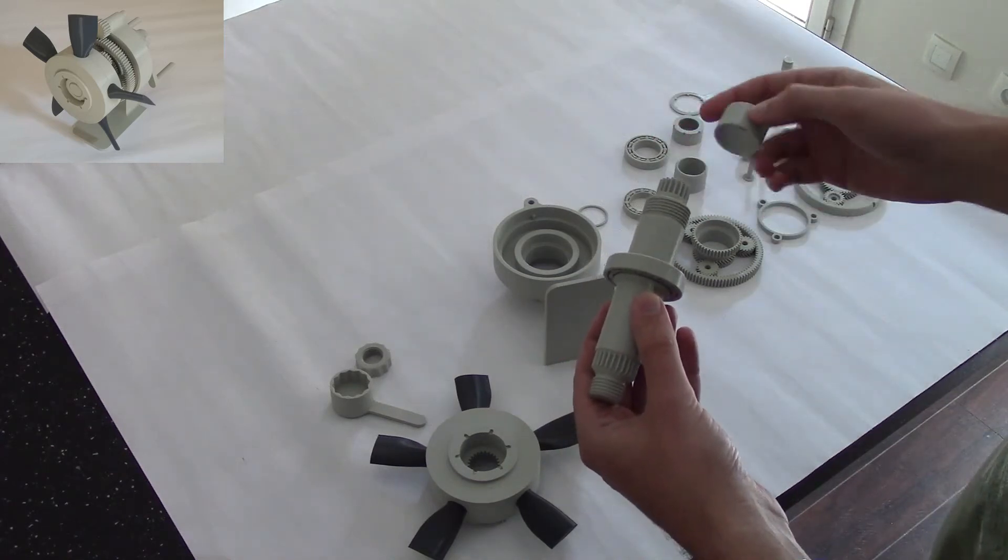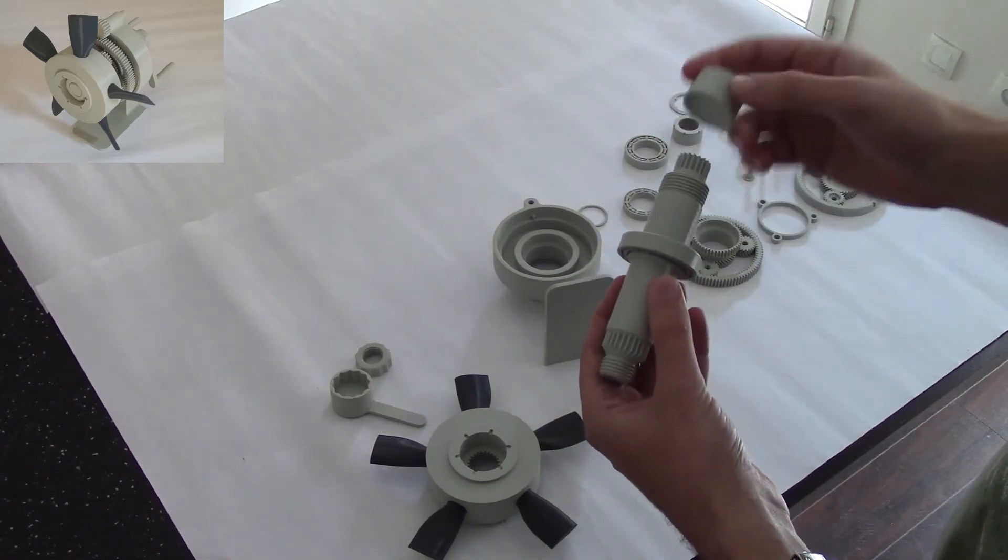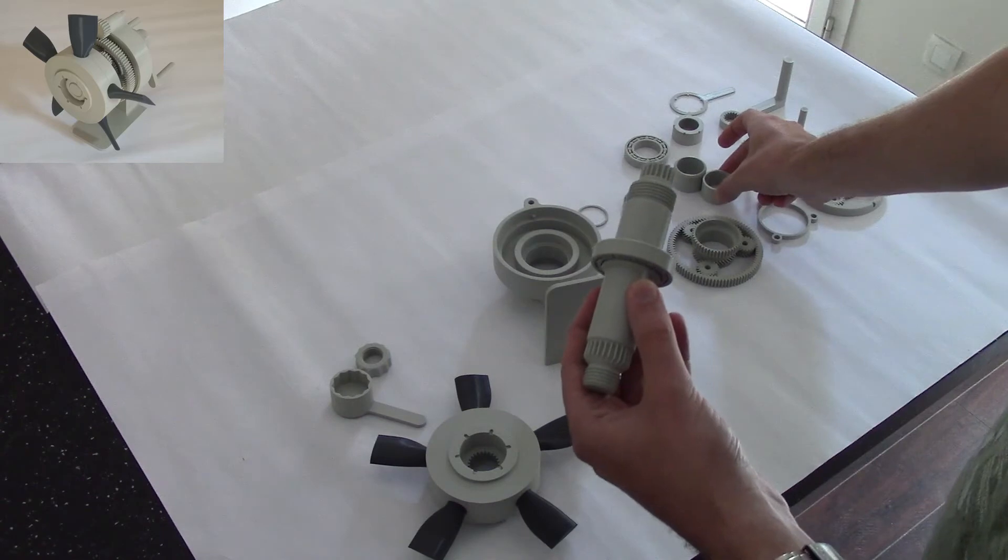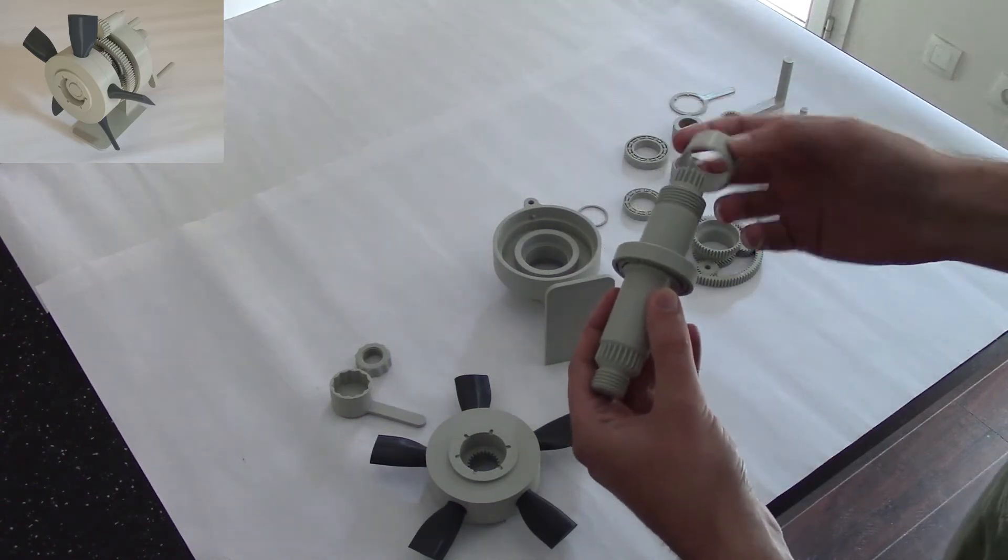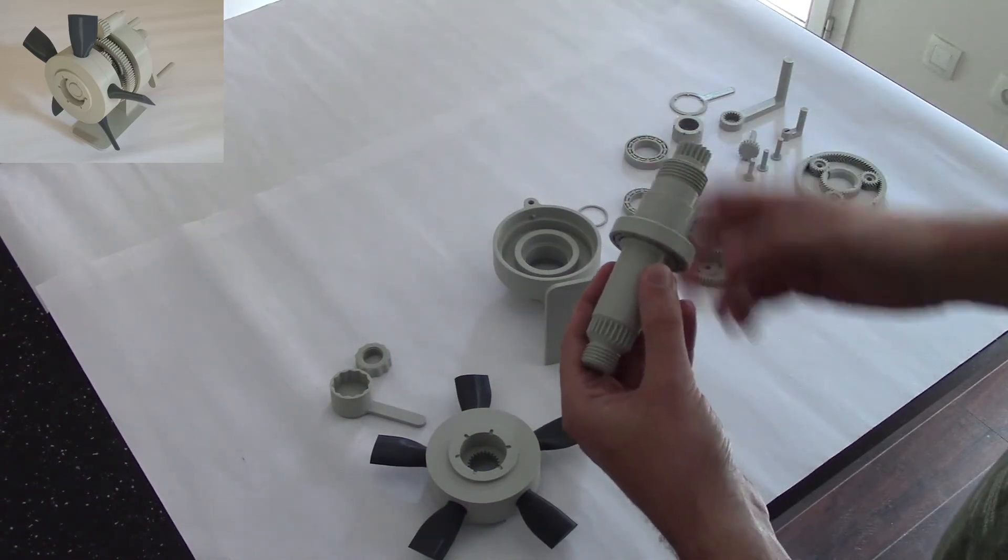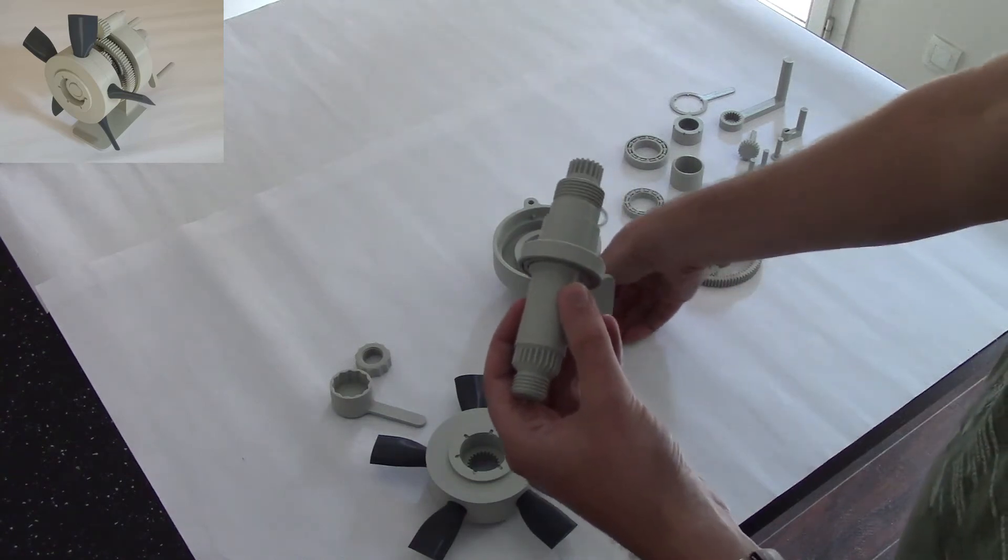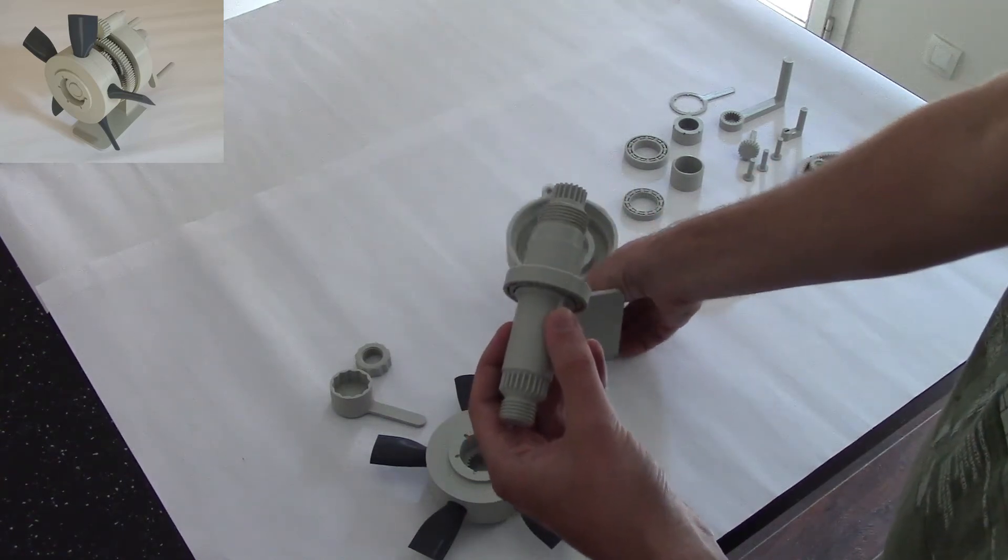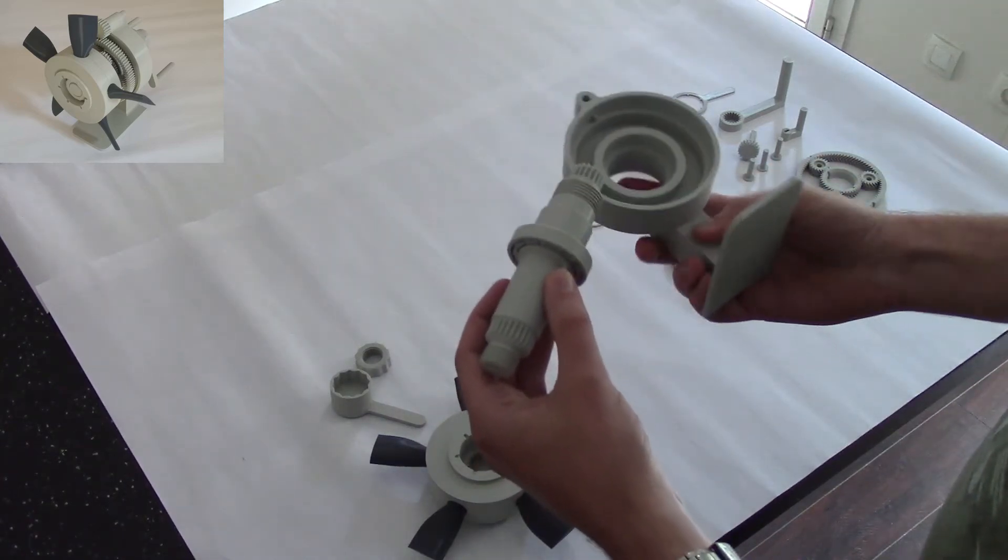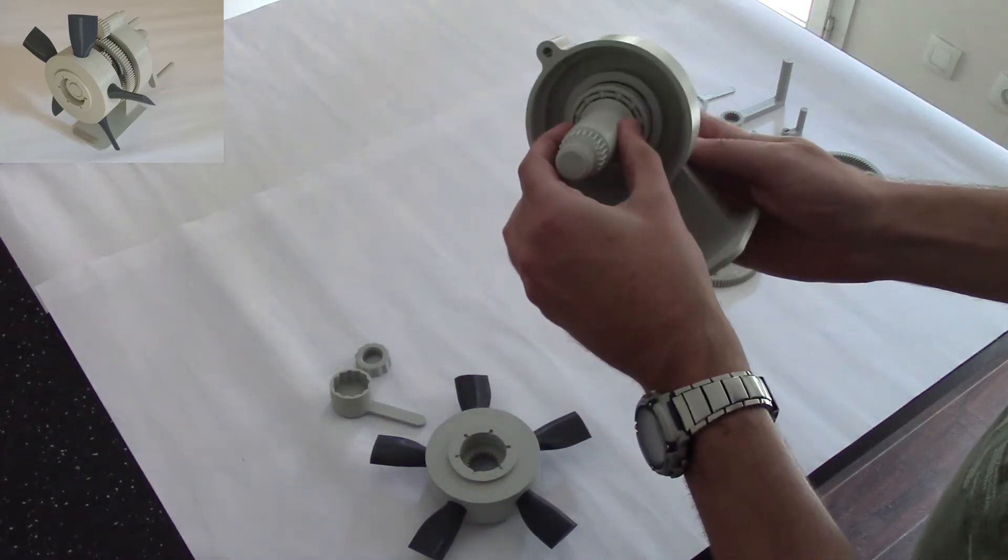Don't mistake one for the other. They're not the same length. The second shortest or second longest spacer you put here. Then we're going to fit this through the front of the front housing like so.